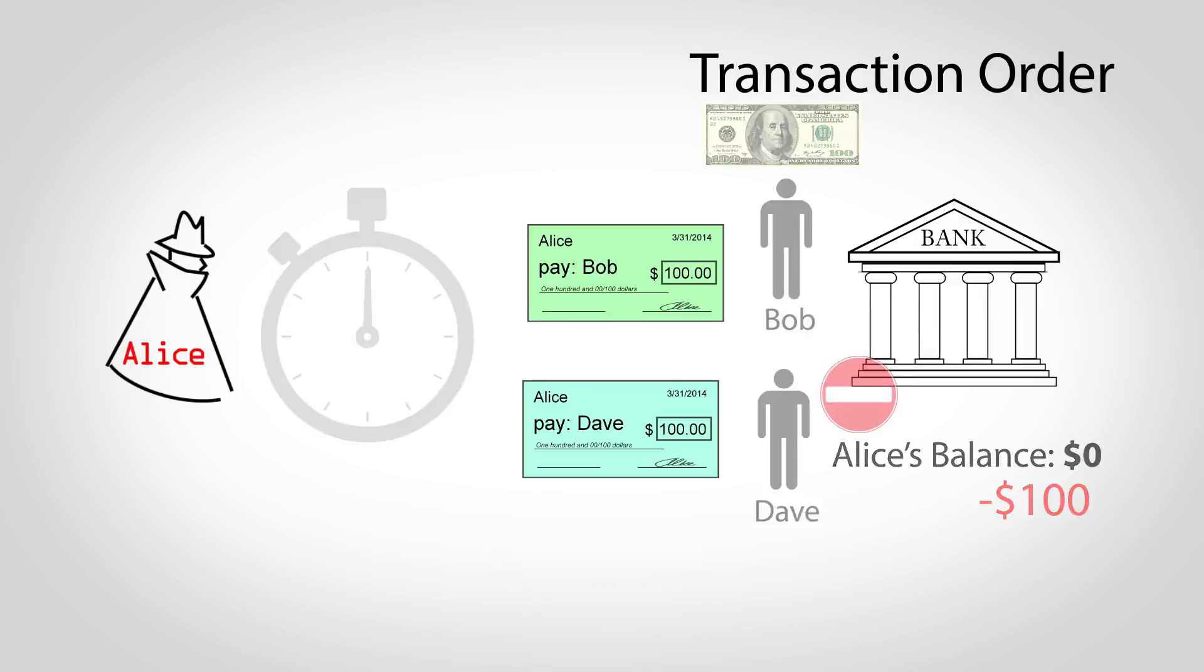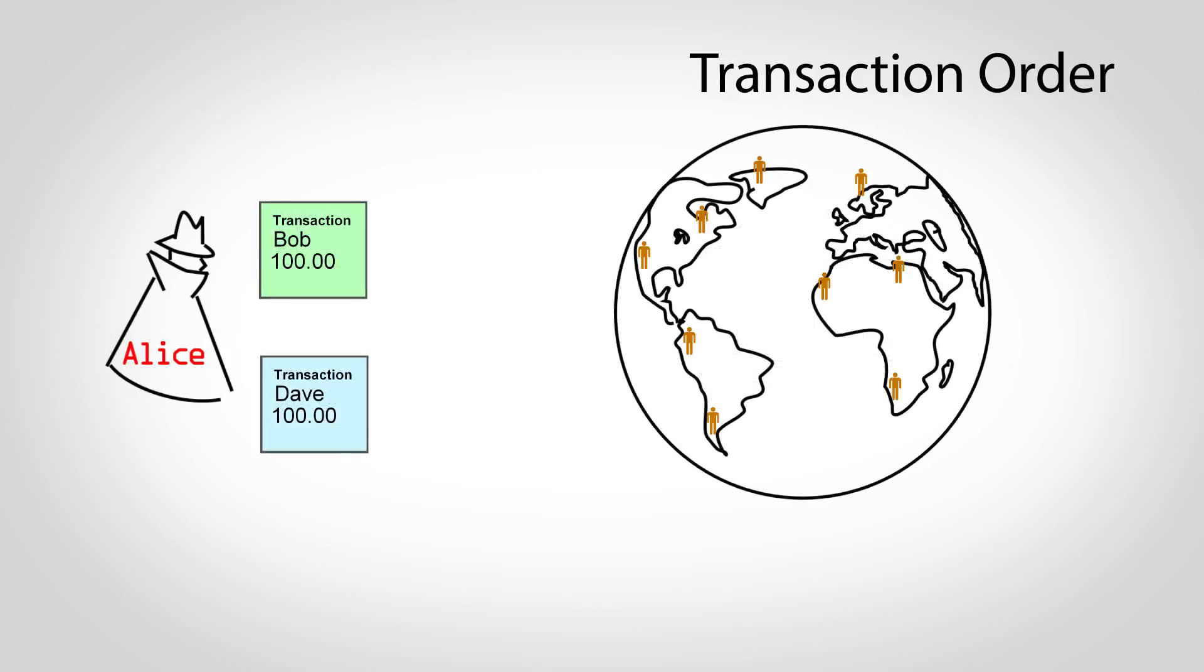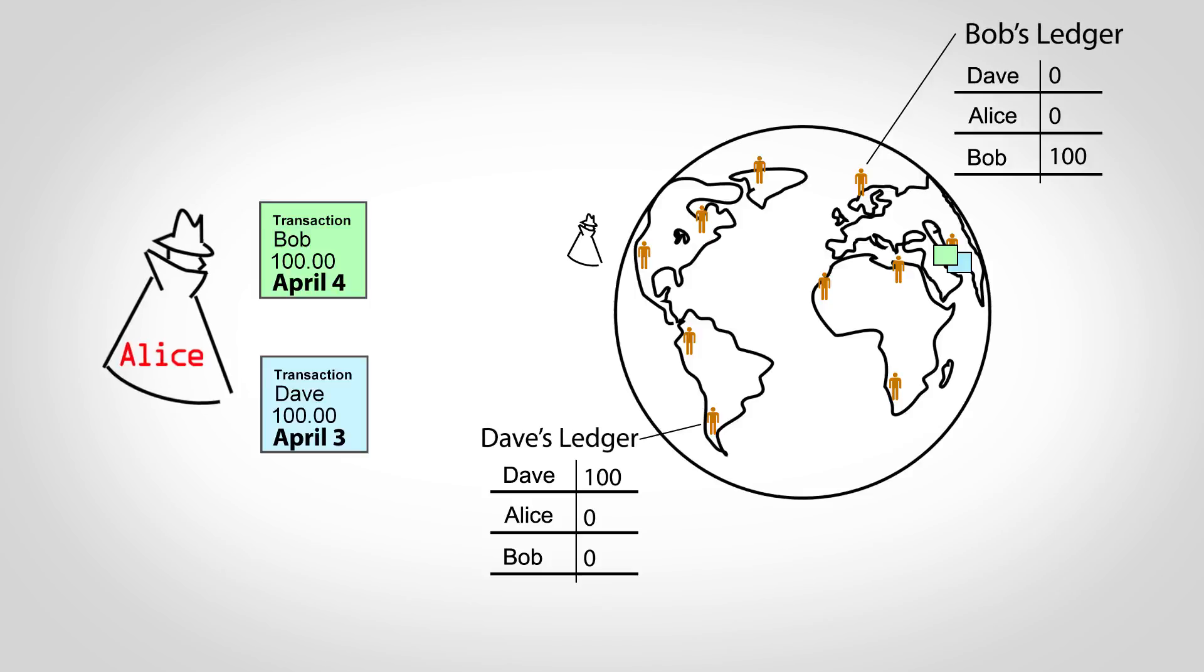Unfortunately, order is much harder to determine in Bitcoin, where instead of a single bank, there are individuals all over the world. Network delays might cause transactions to arrive in different orders in different places, and fraudsters could lie about timestamps. Two recipients might both think their transaction is first and ship a product, effectively allowing Alice to spend money twice.